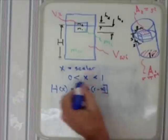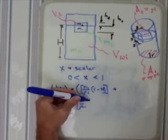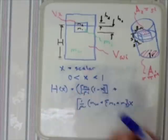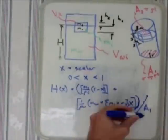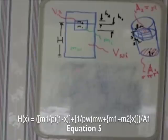The first term is M1 over density of ice times one minus X. The second term is one over the density of water times the mass of water plus this quantity M1 plus M2 times X and all that is over A1. That's equation five and that is the basis for our model.